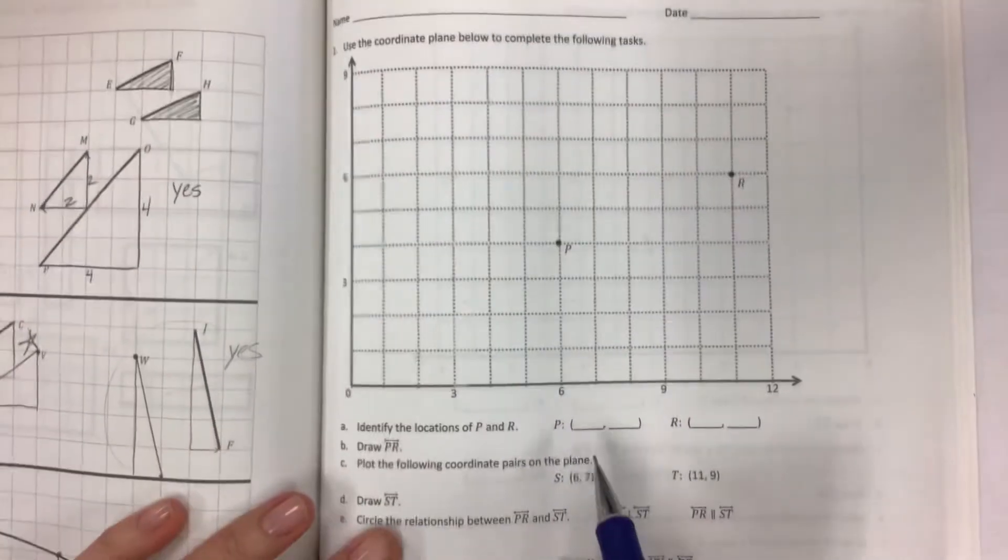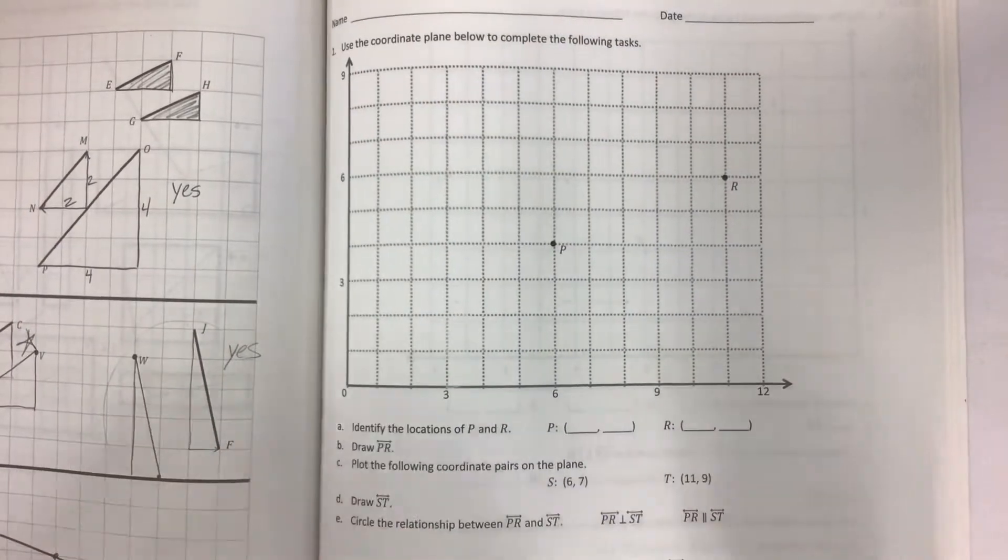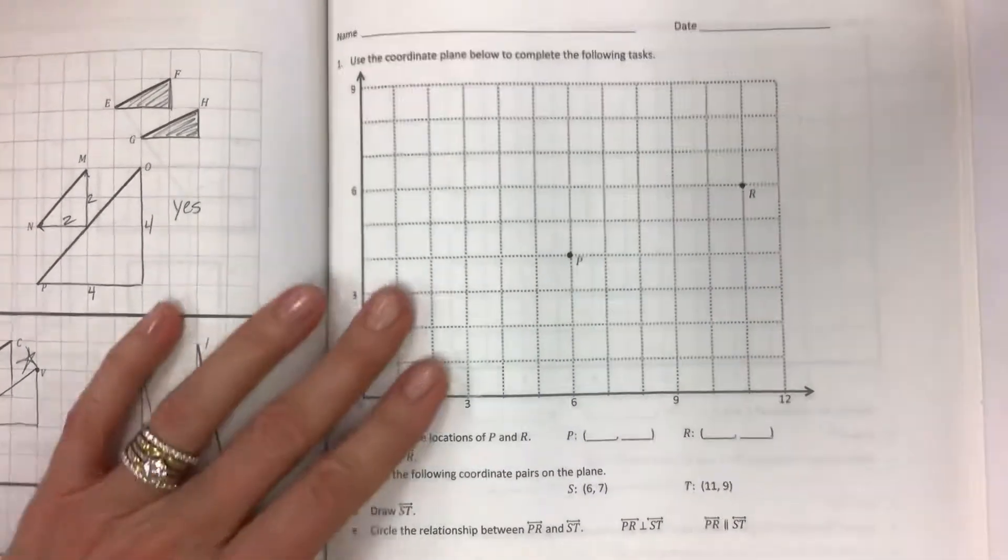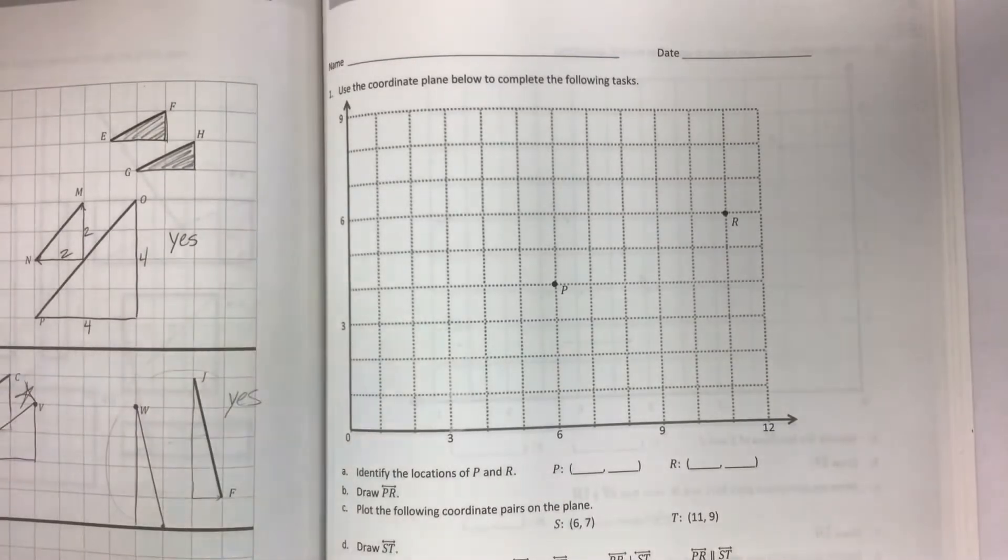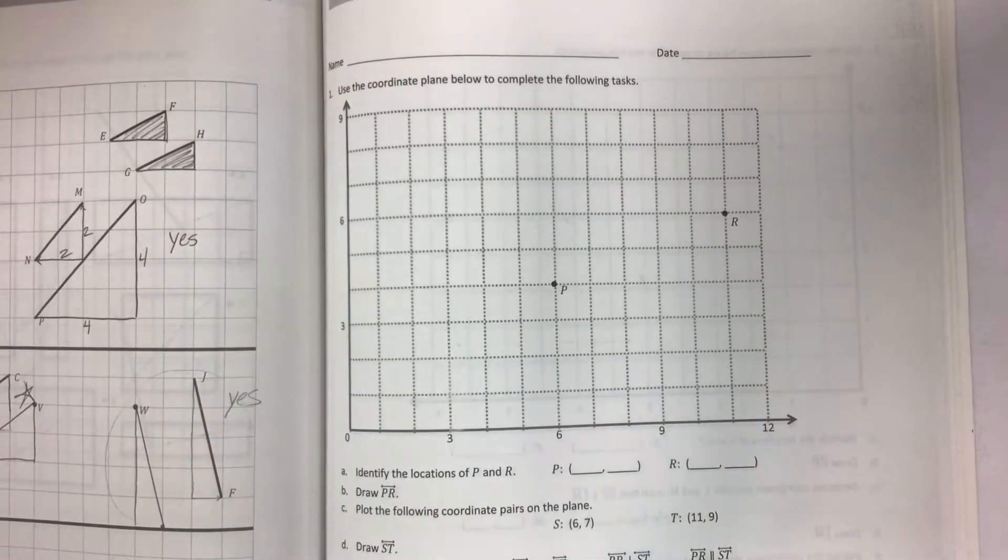So we need to talk about these coordinate pairs and how they're related and look for patterns, which is what we've been doing recently—really talking about and making patterns happen on the grid. So let's get started.